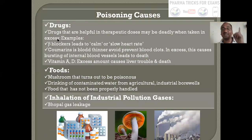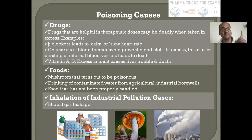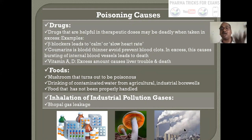Poisoning can be caused by drugs and foods. If taken in excess, drugs like beta blockers, if taken daily for a longer time, can slow down the heart rate. Vitamin A and vitamin D, if taken in excess, cause liver trouble. Foods such as mushrooms — mushroom poisoning is very important because mushrooms rapidly turn into poison if not properly stored. Inhalation is also poisoning — daily we are unknowingly taking poison, such as inhalation of industrial pollution. Example: Bhopal gas leakage — daily we are taking a small amount.